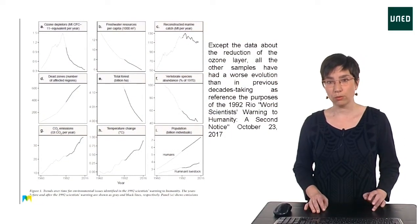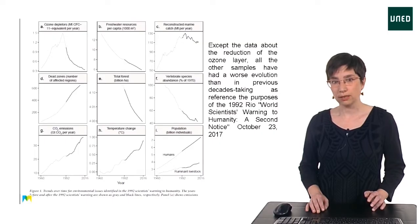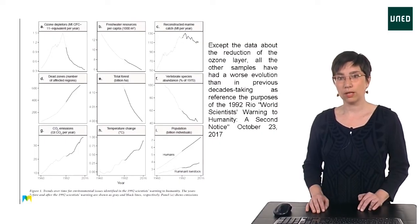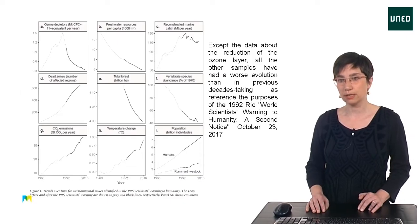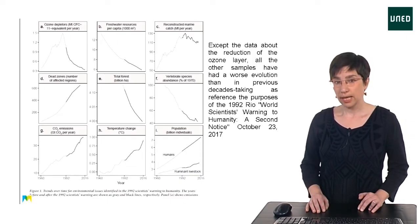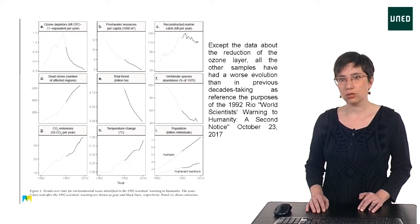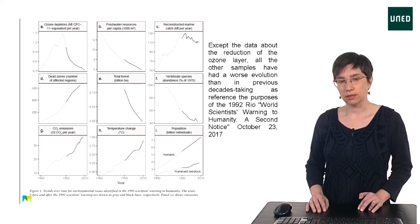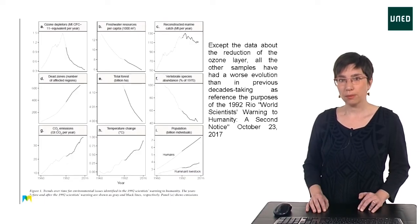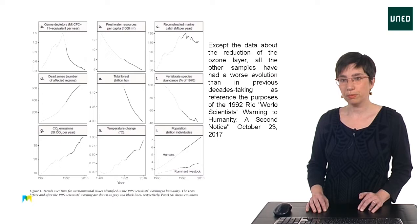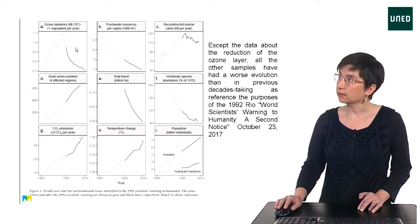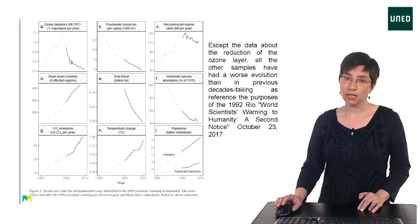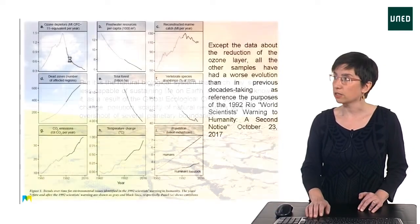In 1992, the document World Scientists' Warning to Humanity, signed by more than 1,700 scientists, showed that we were pushing ecosystems beyond their capacities to support life. They urged that we would greatly reduce greenhouse emissions and reverse the trend of collapsing biodiversity. More than 25 years later, we have only been able to stabilize the stratospheric ozone layer. Humanity has failed to progress in solving these environmental challenges.